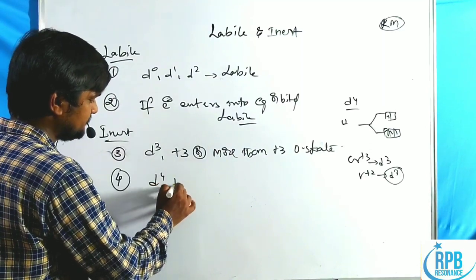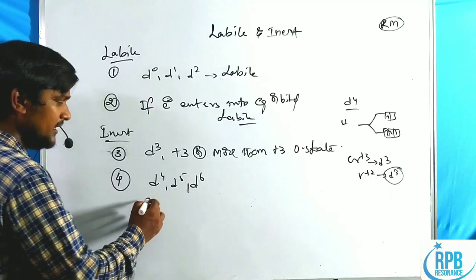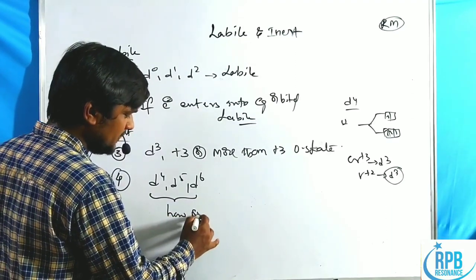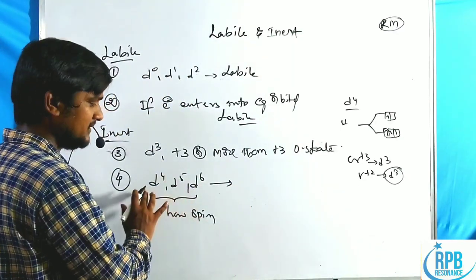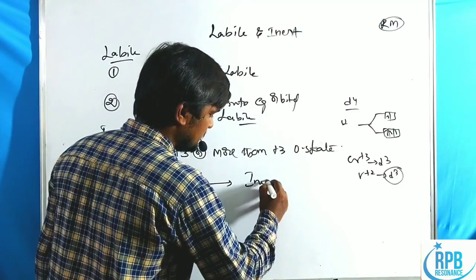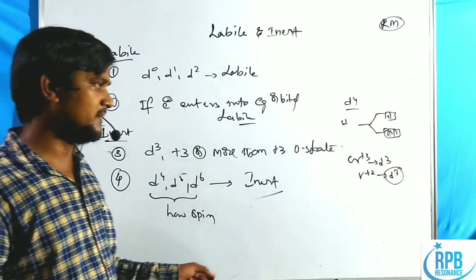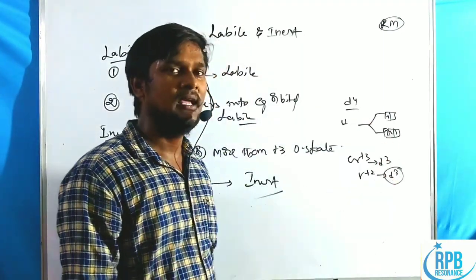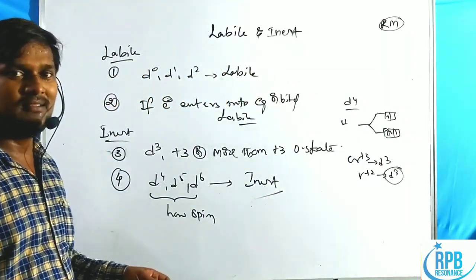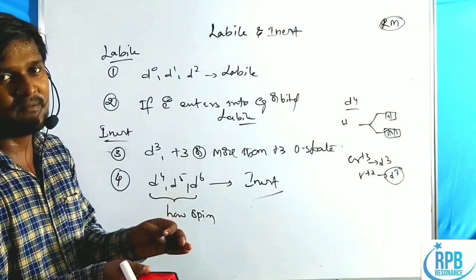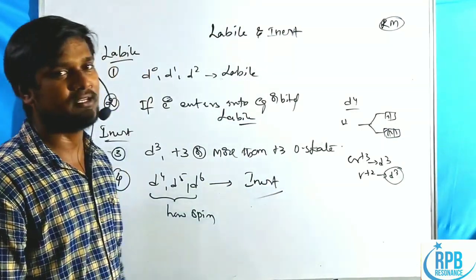Fourth point: D4, D5, D6 — in the presence of low spin complexes, meaning in the presence of strong field ligands, these three are considered as inert complexes. Why? Because in case of low spin complexes, electrons cannot jump to the Eg level. All electrons are present over the T2g orbital, then the half-life of the complex becomes more and more. That is why low spin complexes are treated as inert complexes.